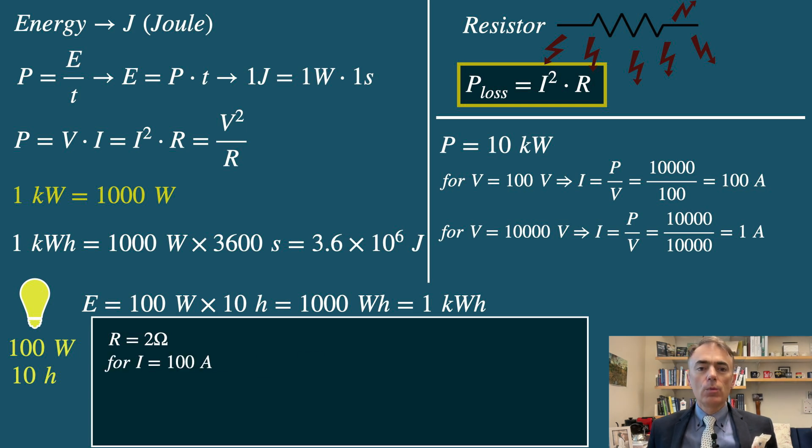At 100 amps, the power loss would be 100 amps squared times 2 ohms, which is 20,000 watts. At 1 amp, the power loss would be 1 amp squared times 2 ohms, which is 2 watts. This comparison shows why high voltage and low current are critical in reducing energy losses.